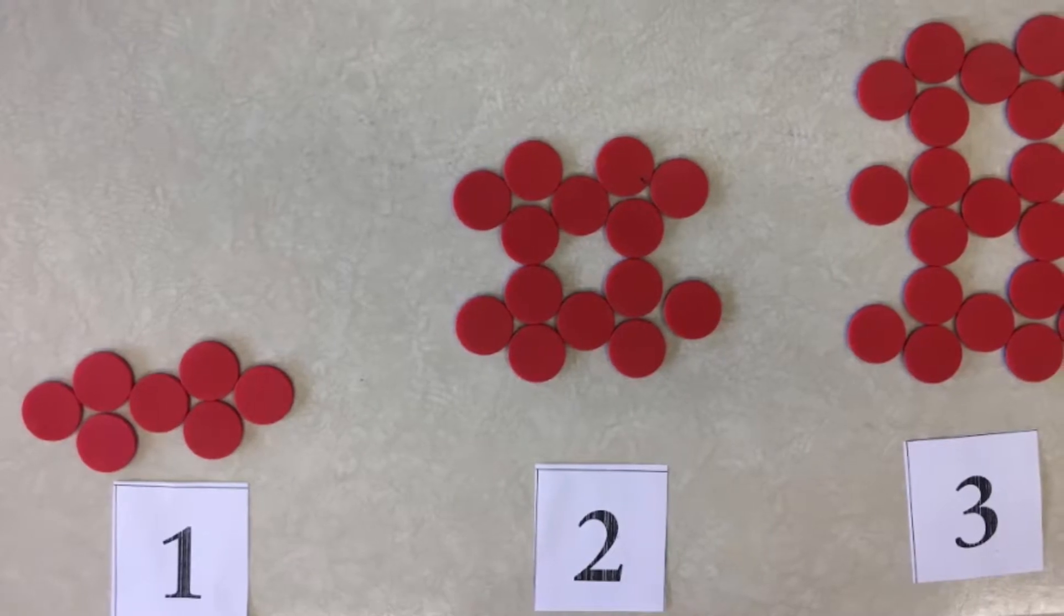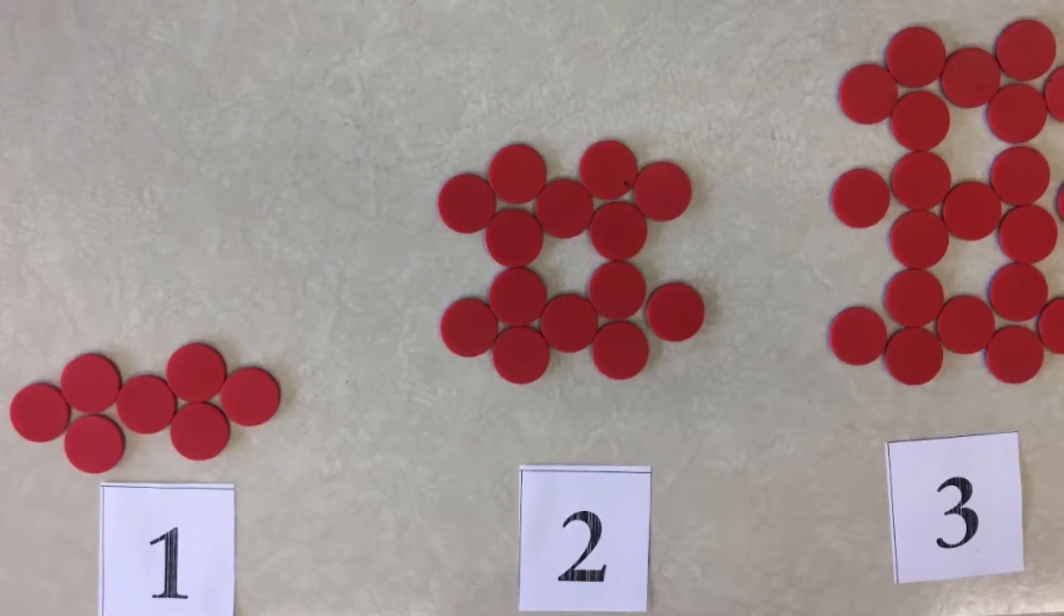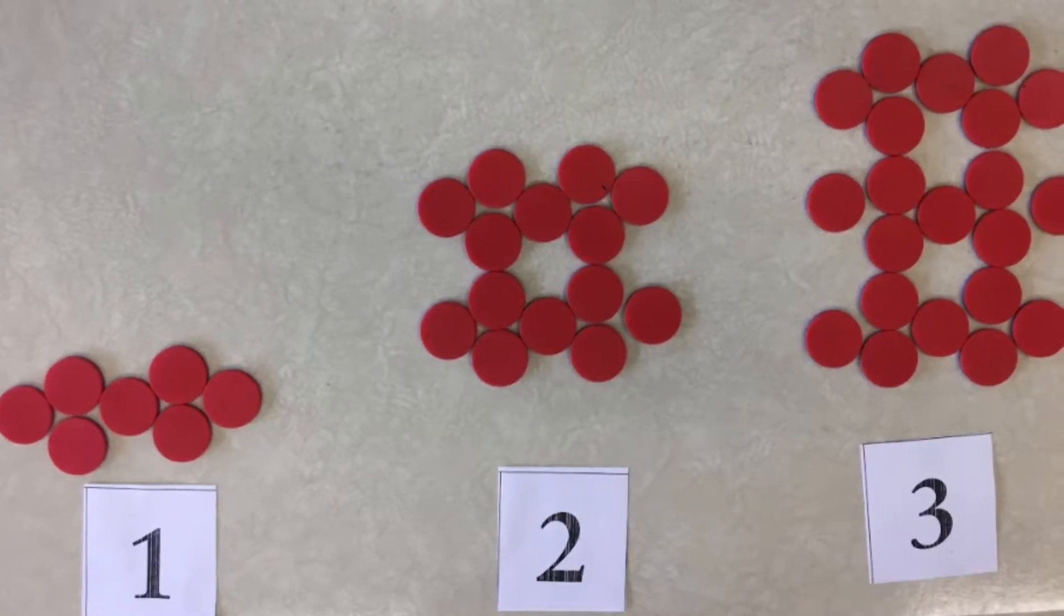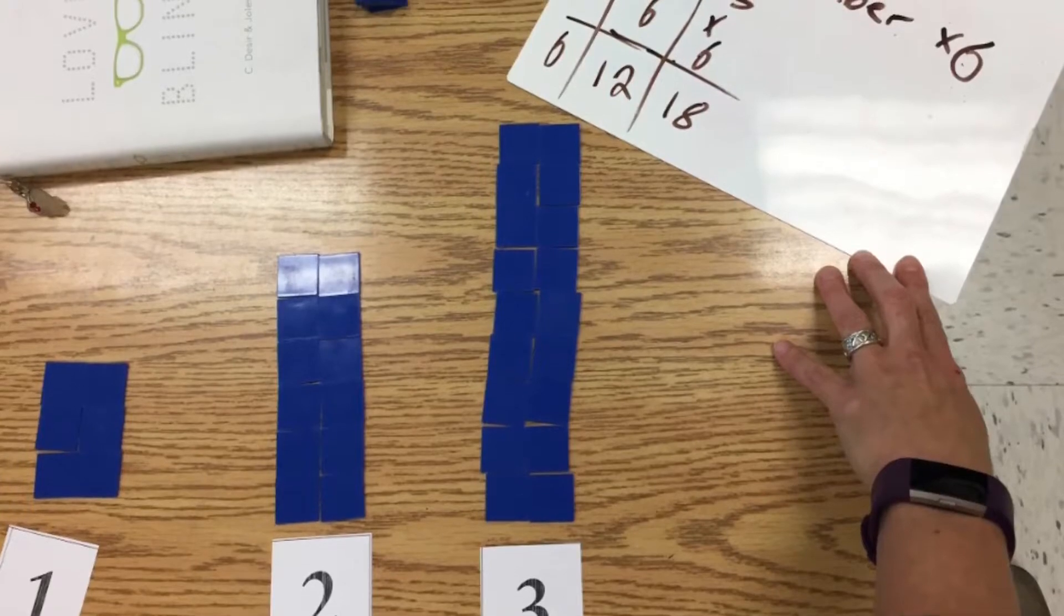Students were then asked to develop their own pattern rule, so this student chose that the number of tiles is the position number times seven, made an interesting unit, and then we asked students to guess each other's rules.